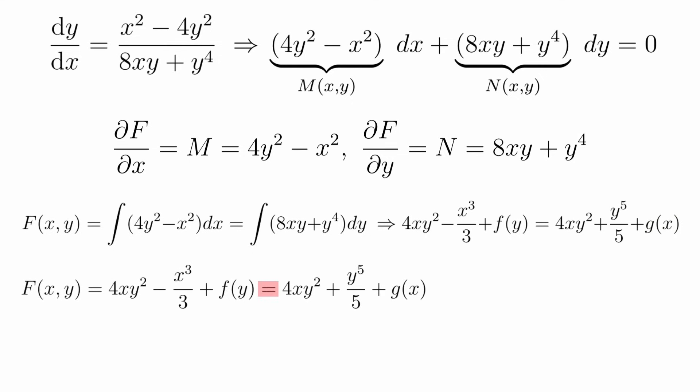These two expressions must somehow be equal to each other because they both define the function f(x,y). Certainly the 4xy² terms match, but what about the others? Notice that if we choose the functions little f(y) and g(x) to each be equal to whatever doesn't match on the other side of the equation, we will have both sides equal to each other. In this case, that means letting f(y) equal y⁵/5, and g(x) equal minus x³/3.